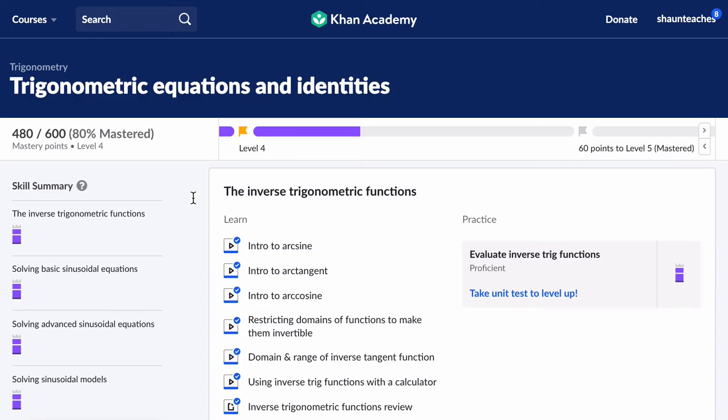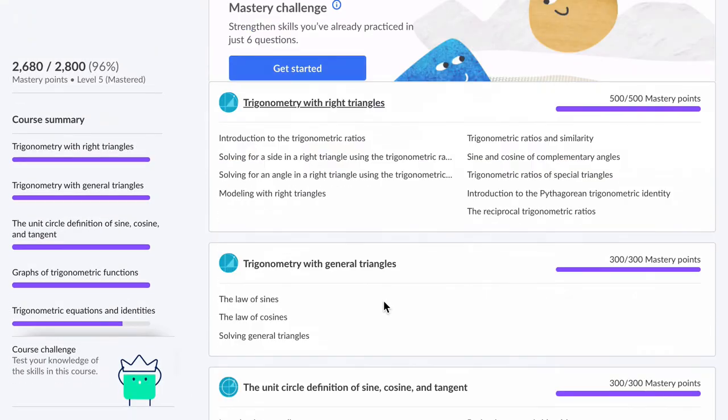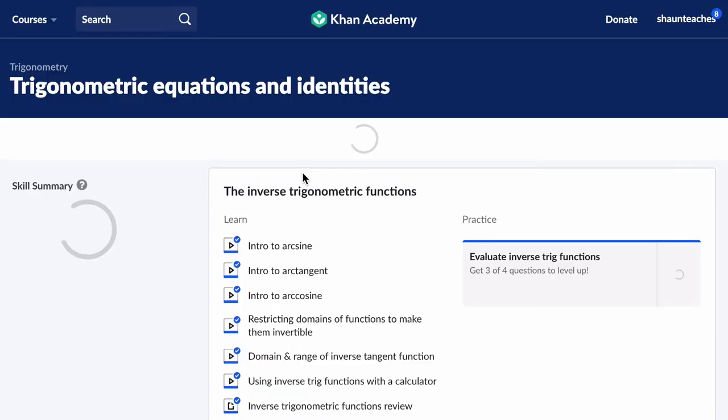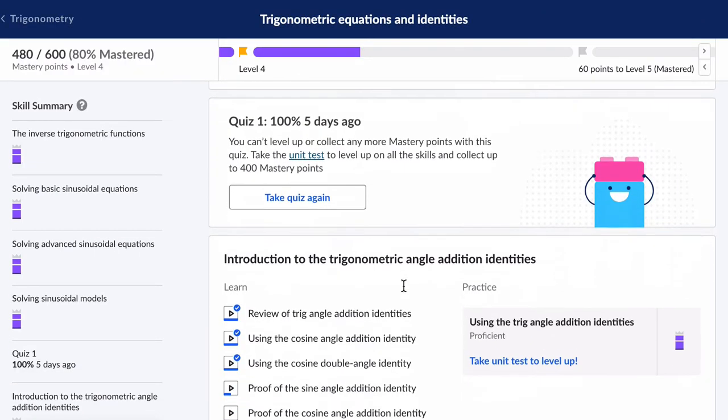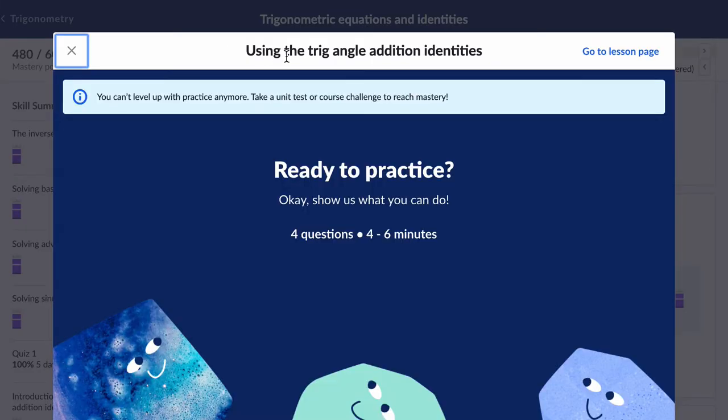Hello, welcome. We are looking at trigonometry here on Khan Academy, specifically the equations and identities section, and towards the end we have introduction to trig angle addition identities. So we're going to go through how to use the trig angle addition identities as this practice module shows us. Let's look at some examples here.